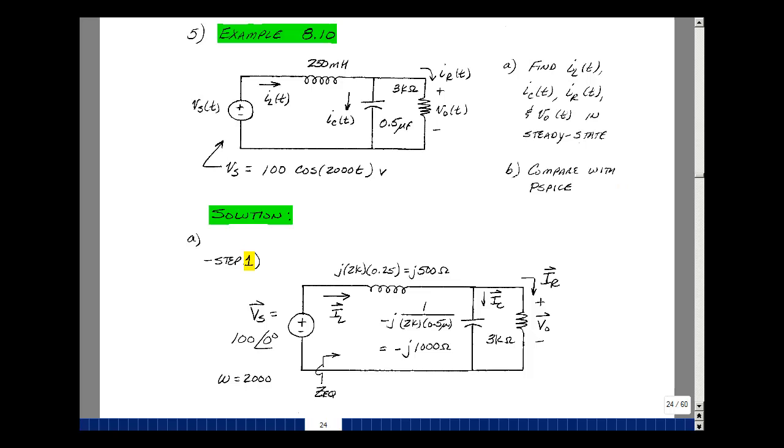Again, we're going to use our three-step algorithm. So the first step is to convert from the time domain to the frequency domain. So our voltage source V sub S is 100 at angle zero, has an omega of 2,000 radians per second.